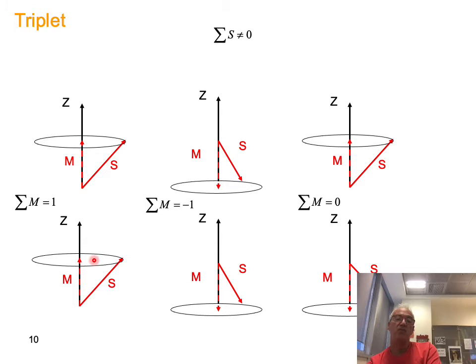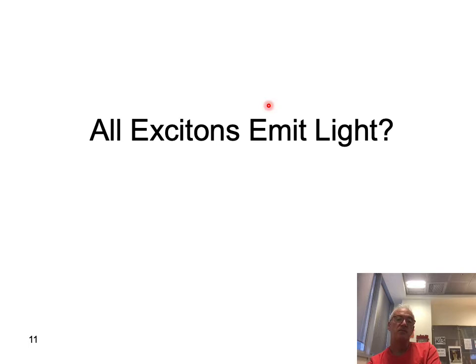Putting all three spin combinations defining the triplet states: m = +1 has both spins up, m = −1 has both spins down, and m = 0 has one spin up and one spin down — but the sum is non-zero; only the projection is zero.